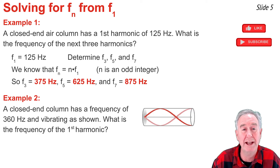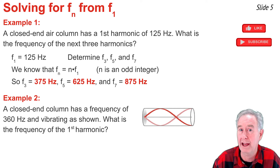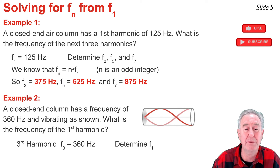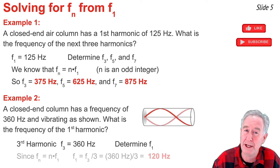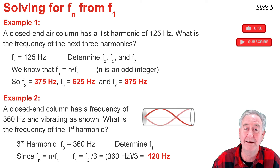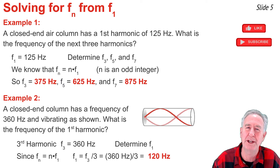In Example 2, I'm given the standing wave pattern for an unknown harmonic and its frequency value, and asked to find the frequency of the first harmonic. Looking at the pattern, I identify it as the third harmonic, so F3 = 360 Hz. Using Fn = n × F1, I get F3 = 3 × F1. Dividing both sides by 3, F1 = 360 Hz ÷ 3 = 120 Hz.